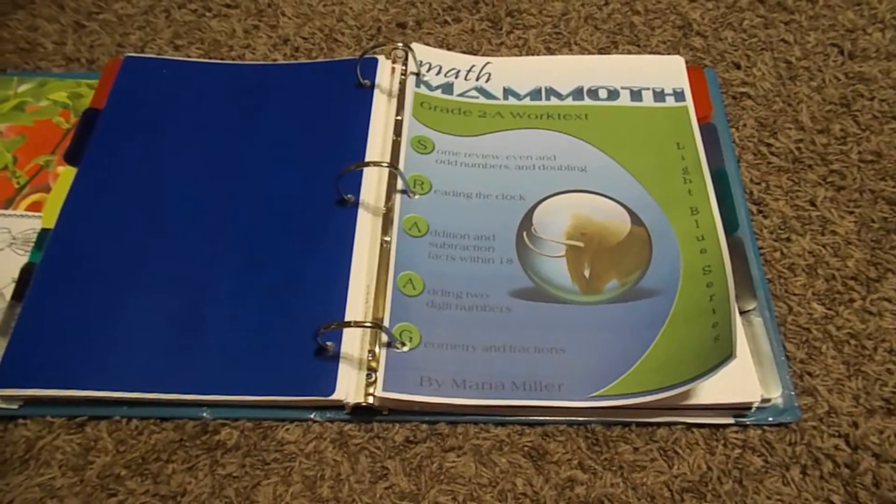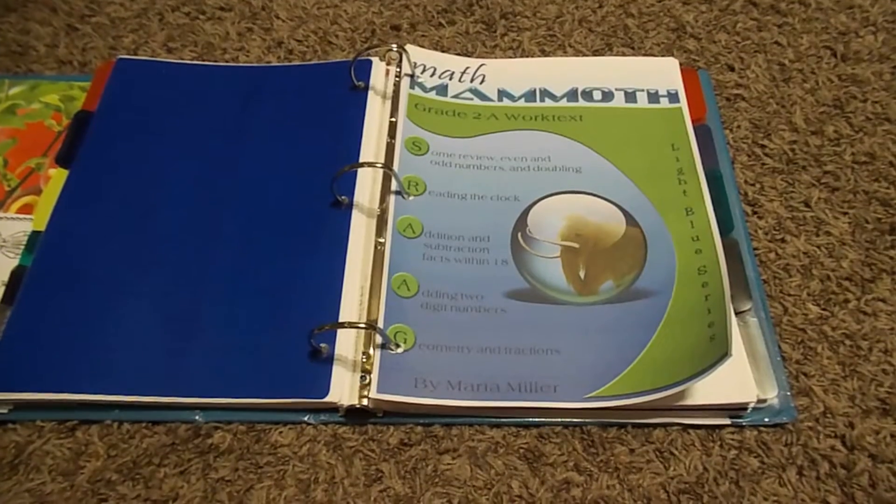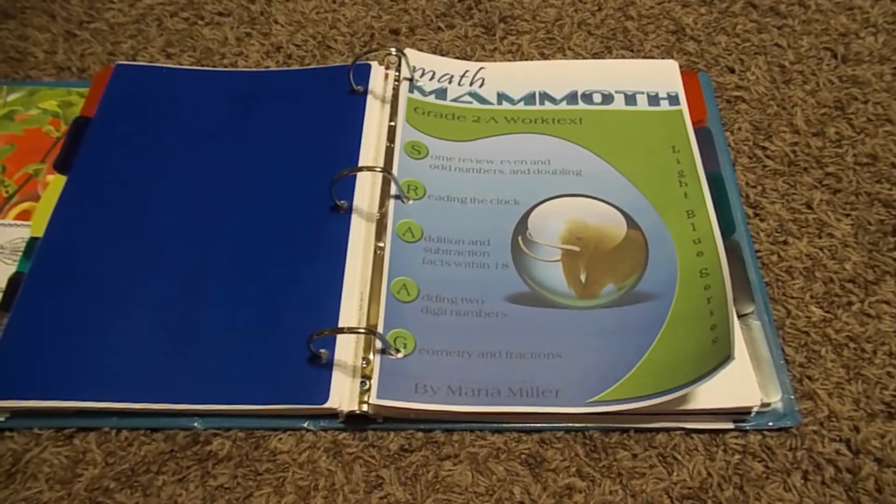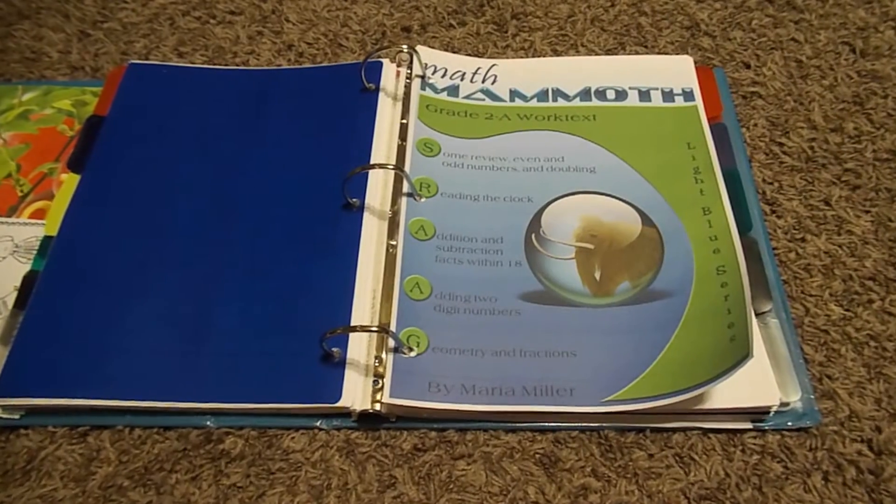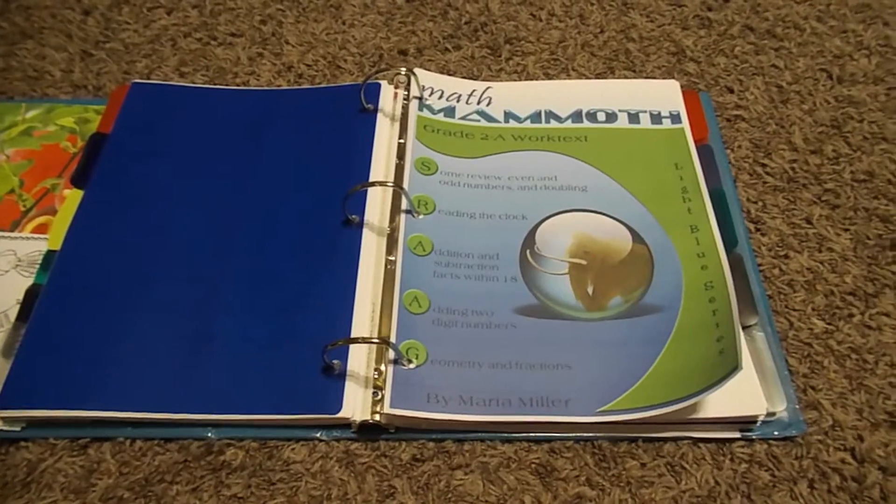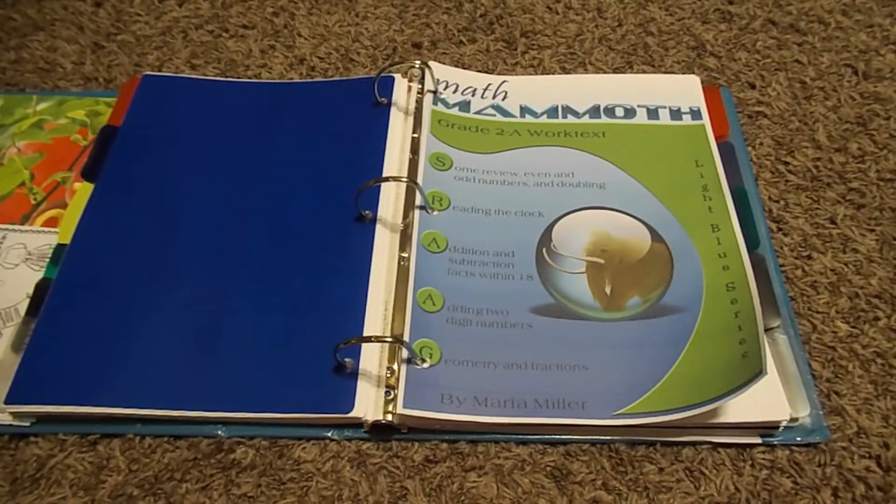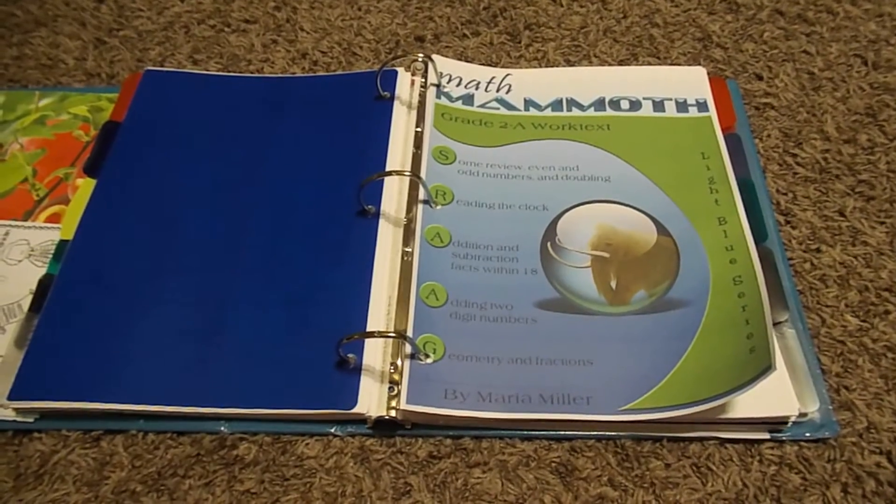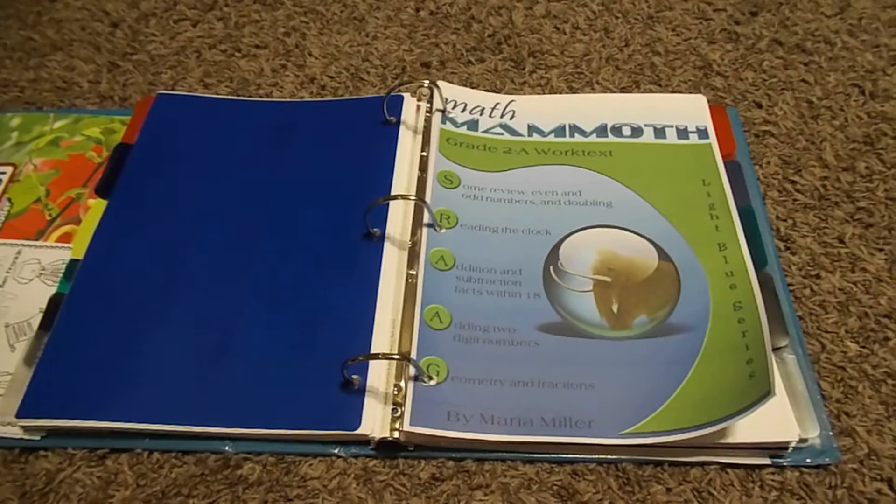So our main curriculum that I teach out of is Math Mammoth, and I bought this I think a little over two years ago. We used Math Mammoth last year for first grade, and we're using the second grade work text this year. I got it on a deal where I got grades one through three for a really good price. I think it was around $60. I don't remember exactly, but it was pretty inexpensive for three years' worth of math.